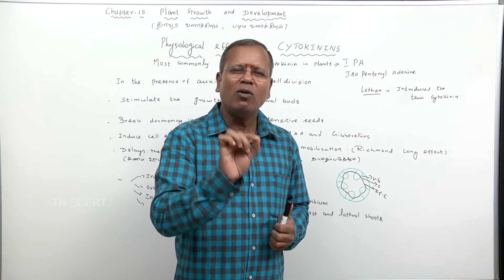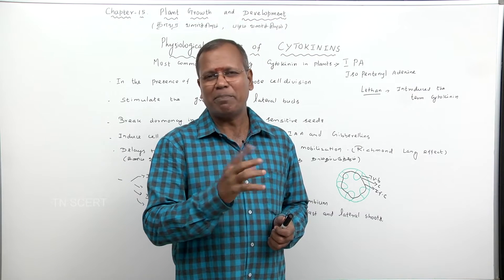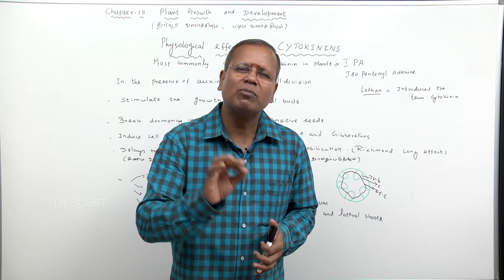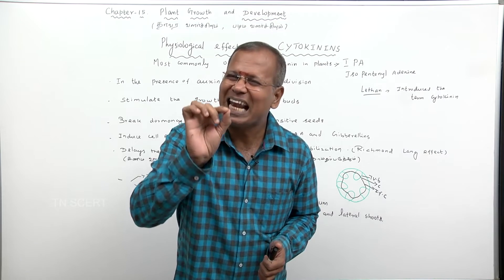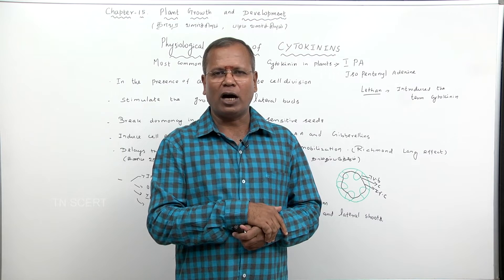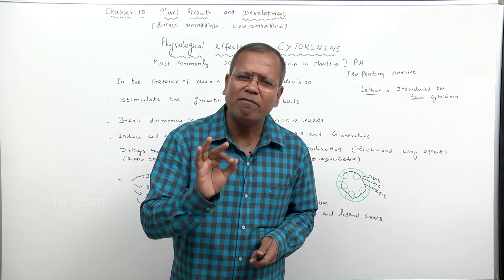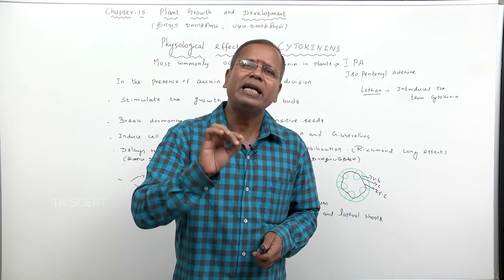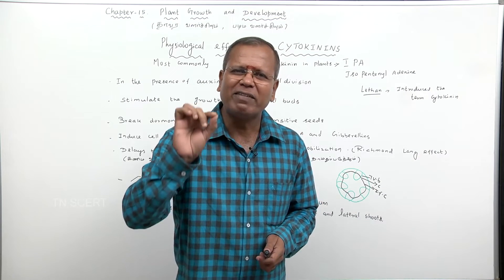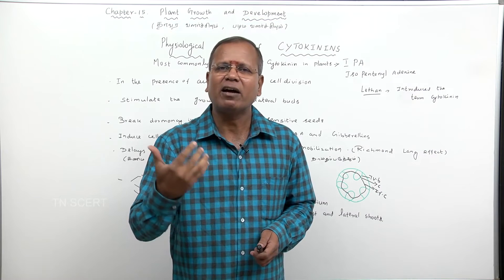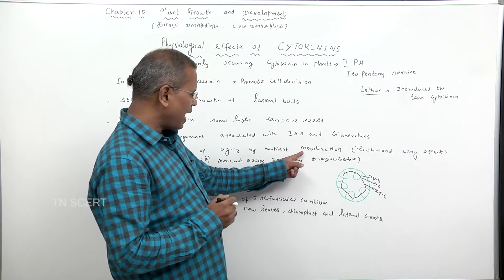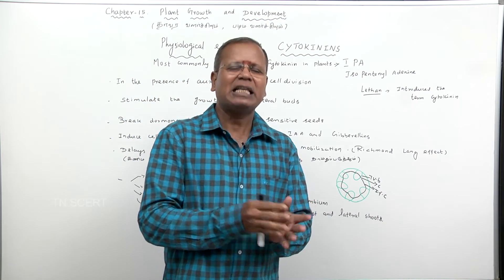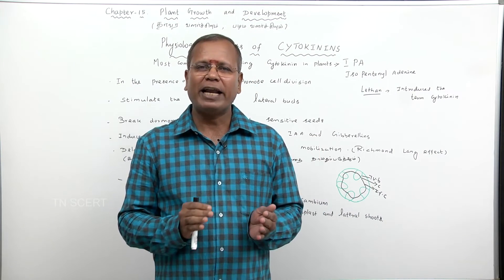In summary: cytokinin stimulates cell division and is responsible for lateral dominance — promoting the growth of lateral buds. It is responsible for the Richmond-Lang effect, which means cytokinin delays the aging process of plants. This delay occurs through nutrient mobilization, where nutrients are redistributed within the plant.